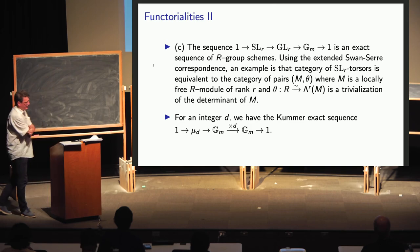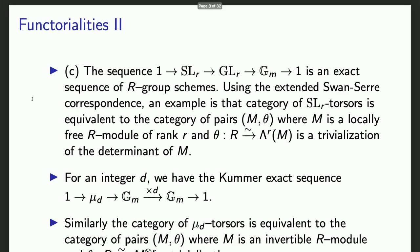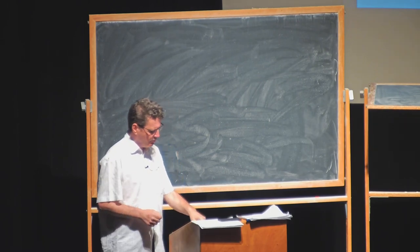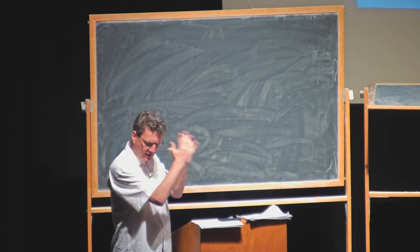Another example is the Kummer sequence with an integer D. The right G_m is a quotient of the middle G_m by the action of μ_D, the roots of unity. The category of μ_D-torsors is equivalent to the category of pairs (M, θ), where M is an invertible R-module and θ is a trivialization of M^⊗D. We recover that H¹(R, μ_D) is the group I described naively yesterday.